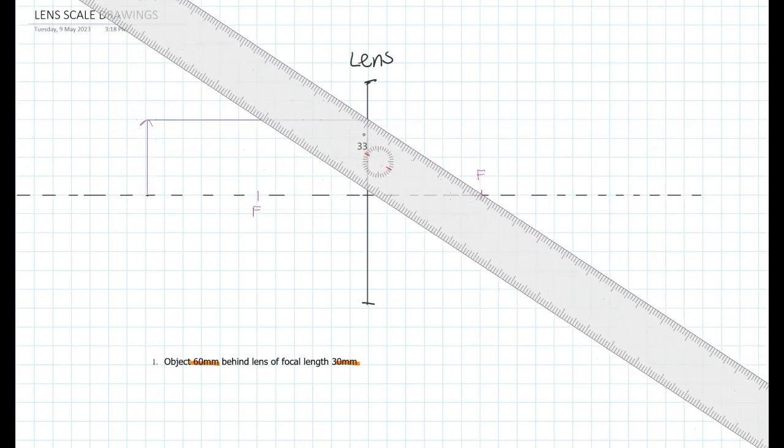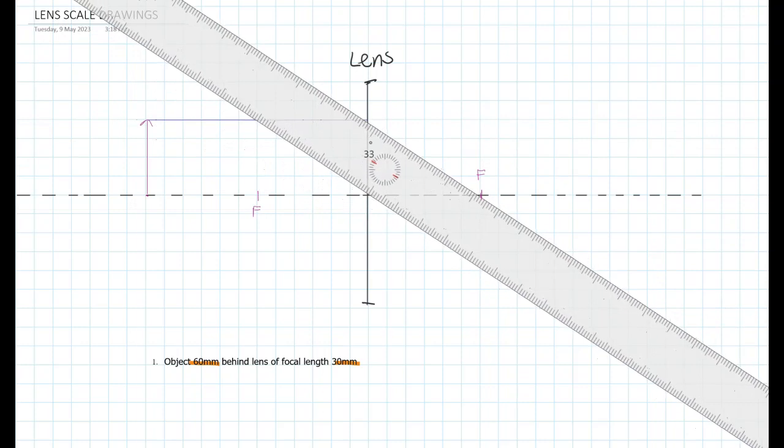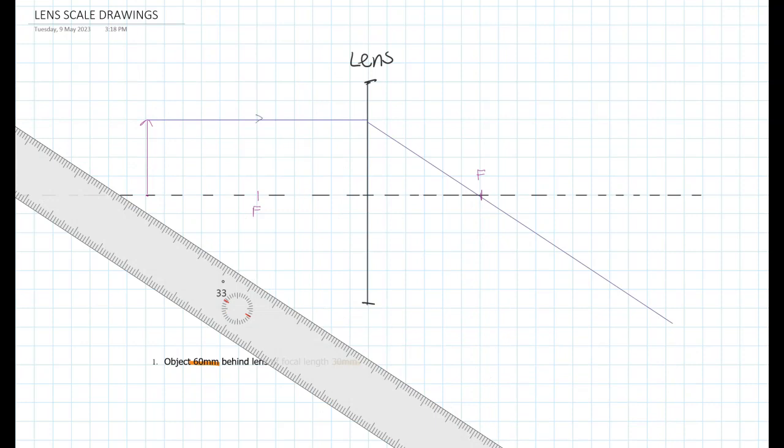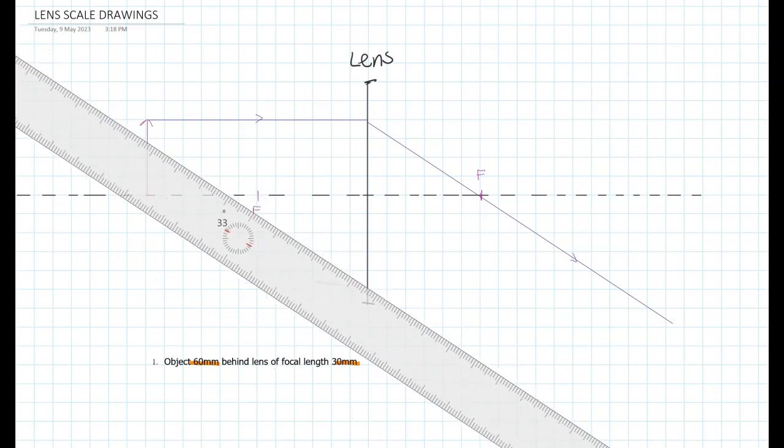So bend pen and it passes through the focal point. A bit easier to do on paper not computer but there's that first ray.